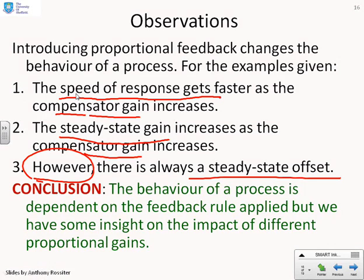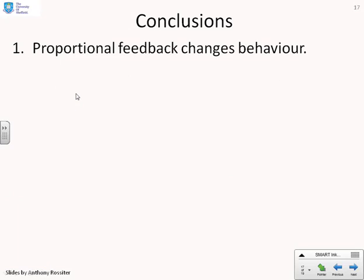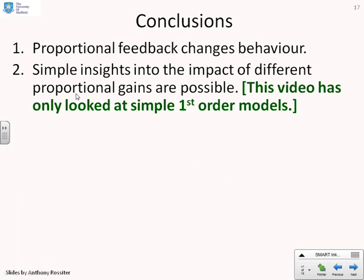So in conclusion, the behavior of a process is dependent on the feedback rule applied. We change the feedback, we get different behavior. And we've got some insight from this video into the impact of choosing different proportional gains. So conclusions: Proportional feedback changes behavior. We've got some simple insights into the impact of different proportional gains. But we should note this video has only looked at simple first order models. And those insights may change with higher order models.